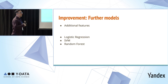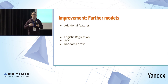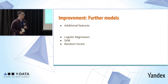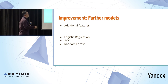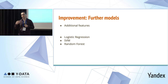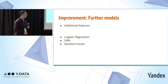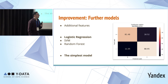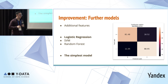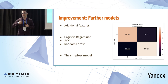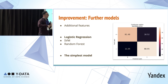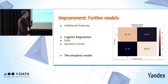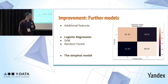We engineered a bunch of different features and ran logistic regression, SVM, and random forest. In the end, all their performance was pretty much comparable, so we chose the most basic — logistic regression again. The final performance was 81% and 81.4% accuracy on the zero label and 88.9% on the one label.